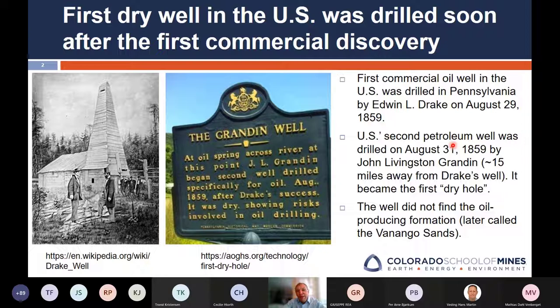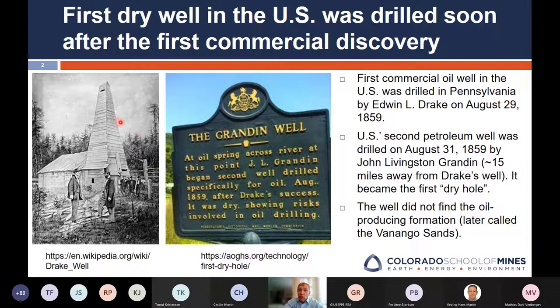So, dry holes — dry holes are nothing new. Unfortunately, we don't usually like talking about them much. Think about your education and going to conferences on petroleum geoscience — you're probably all familiar with the Drake well, officially the first discovery well in the U.S., which everybody talks about as the start of the petroleum industry in the U.S. in 1859. Not many people know about the Grandin well, which you can consider the first official dry hole in the U.S. What's interesting is it's in the same play as the Drake well — the Venango sands, Devonian sands in Pennsylvania — and it did not find the reservoir. It was the first official dry well, and it shows the risks involved in oil drilling.